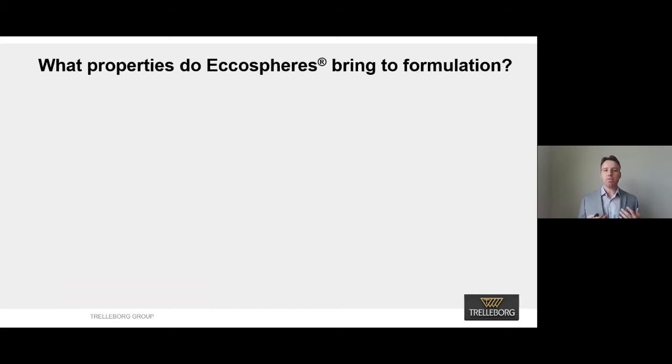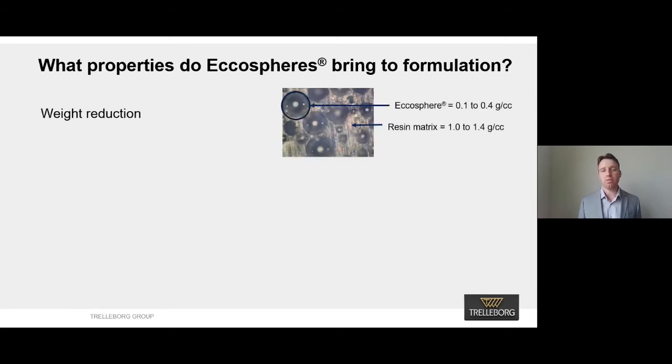I want to talk about some of the basic properties that are brought to any formulation through the addition of echospheres. They are, as I said earlier, they're very lightweight. And what that means is for the more volumetric addition of the hollow glass microsphere you give to the formulation, the lower the density will be because resin densities are generally 1 to 1.4 grams per cc. And the ecosphere densities are 0.1 to 0.4. So the more you put in, the lower the weight. And again, you can see from that image there how spherical the product is. So again, they blend in very, very well.